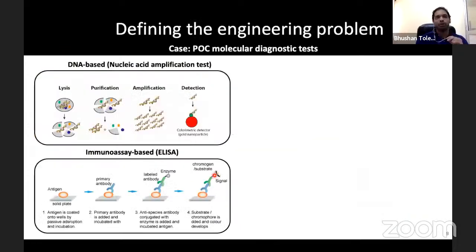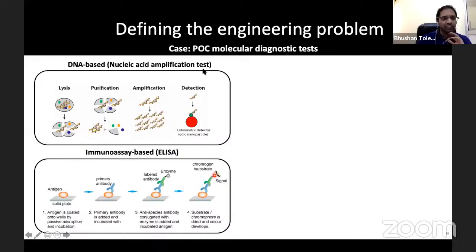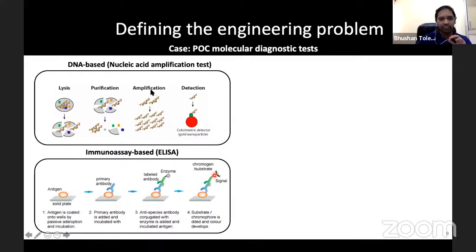Let's define the engineering problem. For a point-of-care molecular diagnostic test — a nucleic acid amplification test like a COVID test — you must lyse the virus or bacteria to release DNA or RNA, perform nucleic acid extraction to purify the DNA or RNA, amplify it (typically by PCR), and then detect it. Multiple steps are involved in nucleic acid amplification.